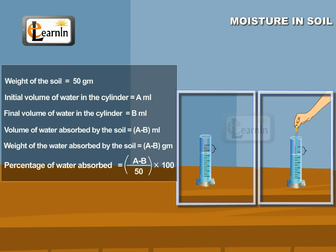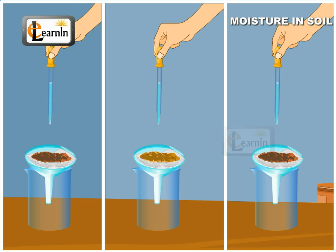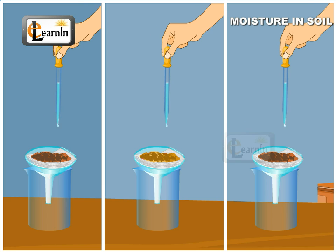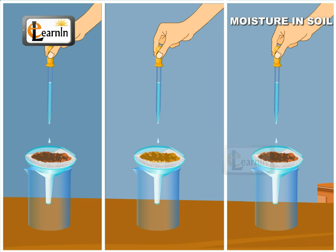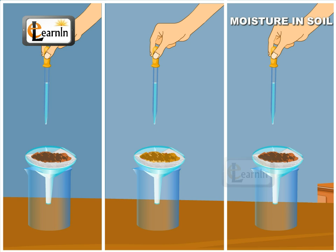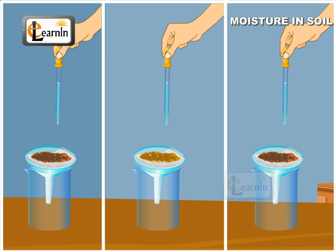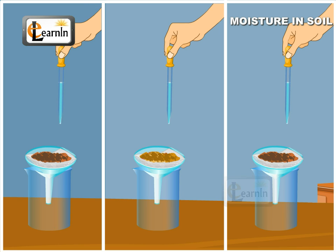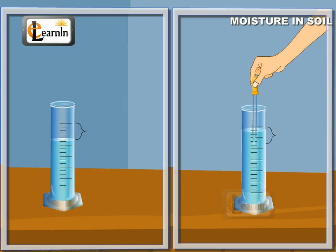Repeat this experiment with different soil samples and record all the results. We will notice that the water retention capacity of all soils differ from each other. Find out which soil has the maximum water retention capacity and which has the minimum.